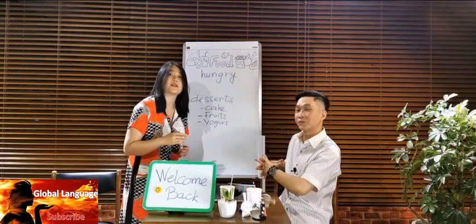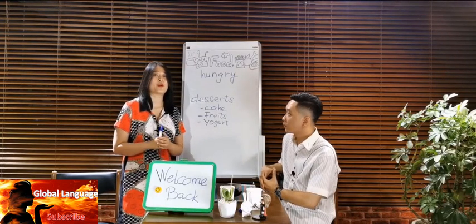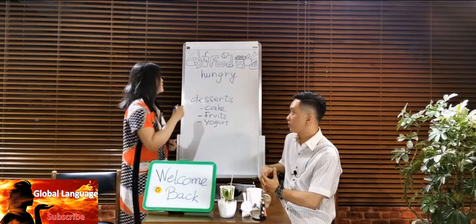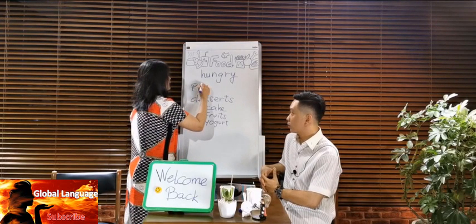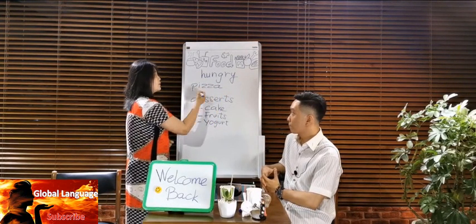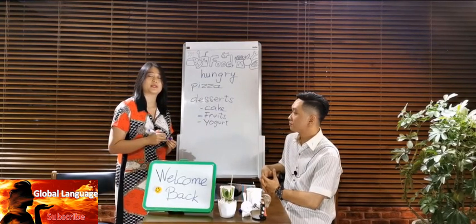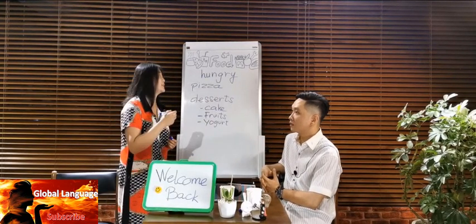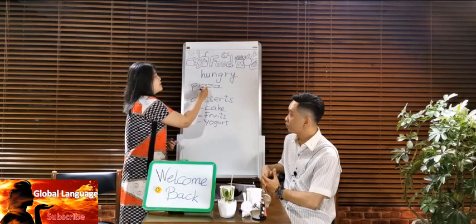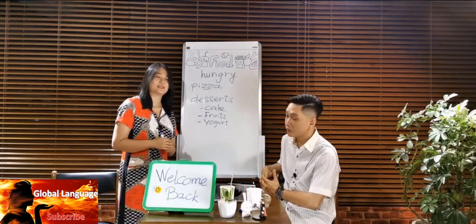And in the conversation, I mentioned phở which is a Vietnamese food, famous Vietnamese food. And then Jimmy mentioned pizza. So it's a bit difficult to actually pronounce the word correctly. So it's actually pizza. Pizza. With a s sound, not the z sound. Pizza.